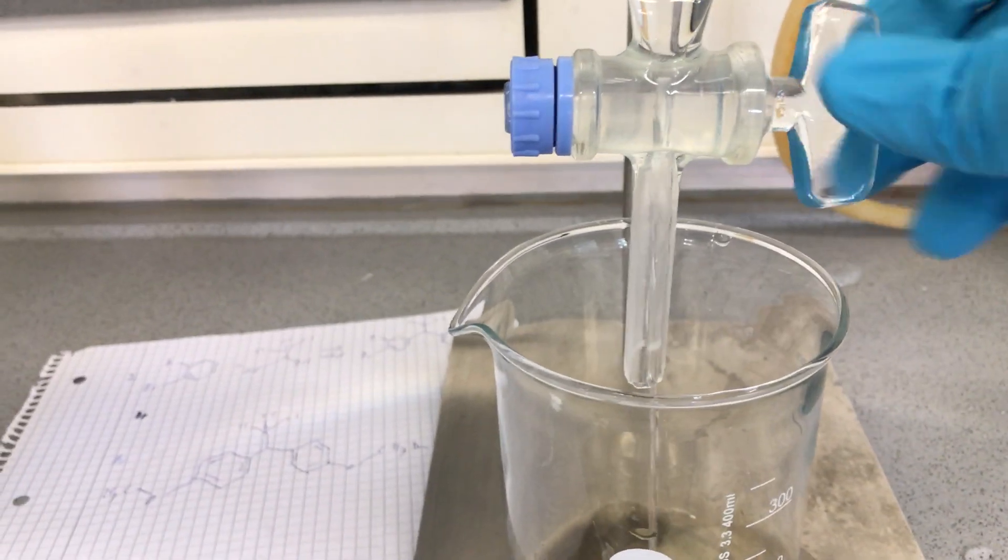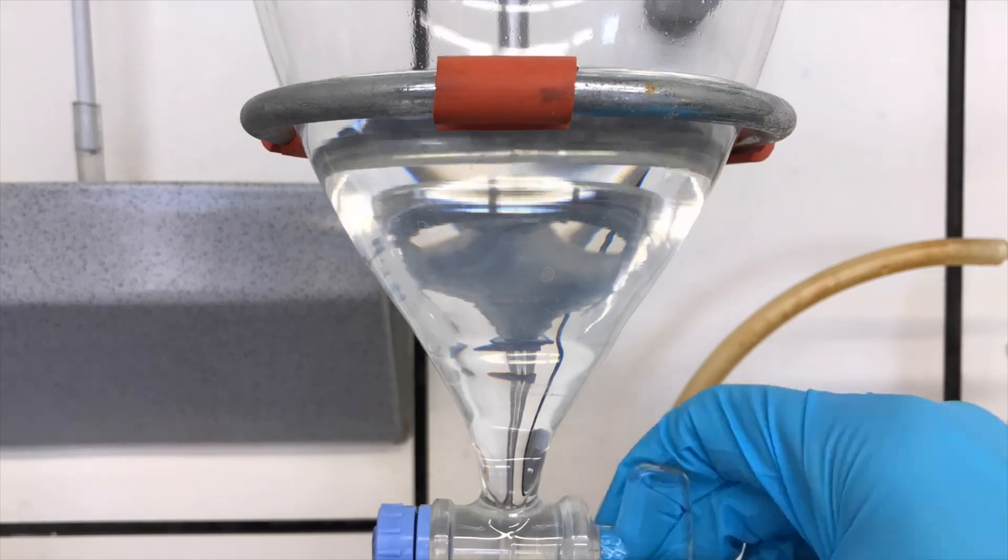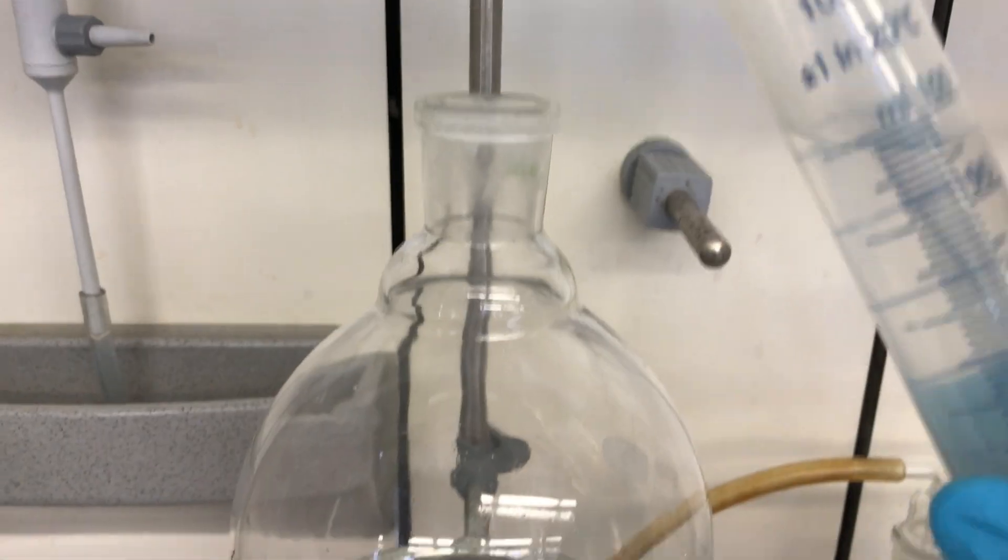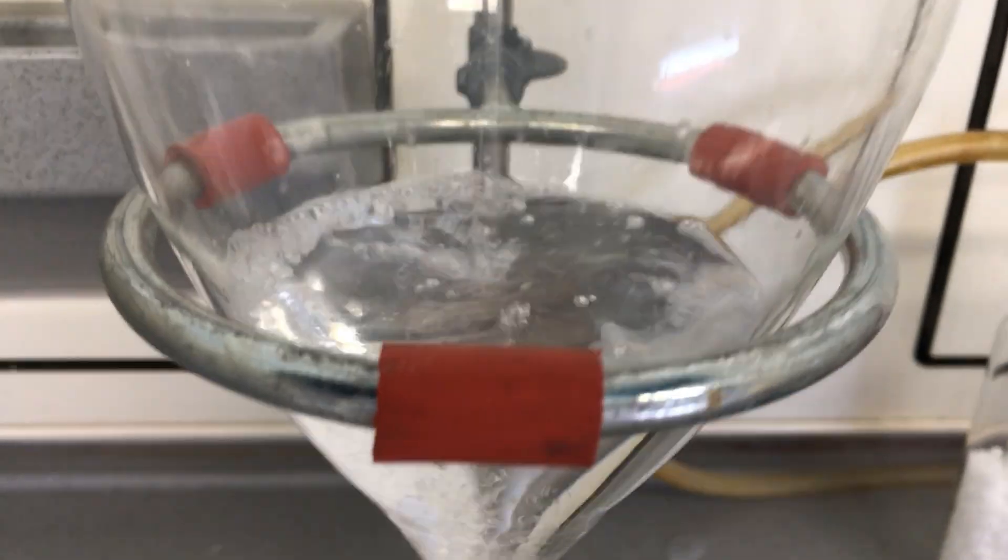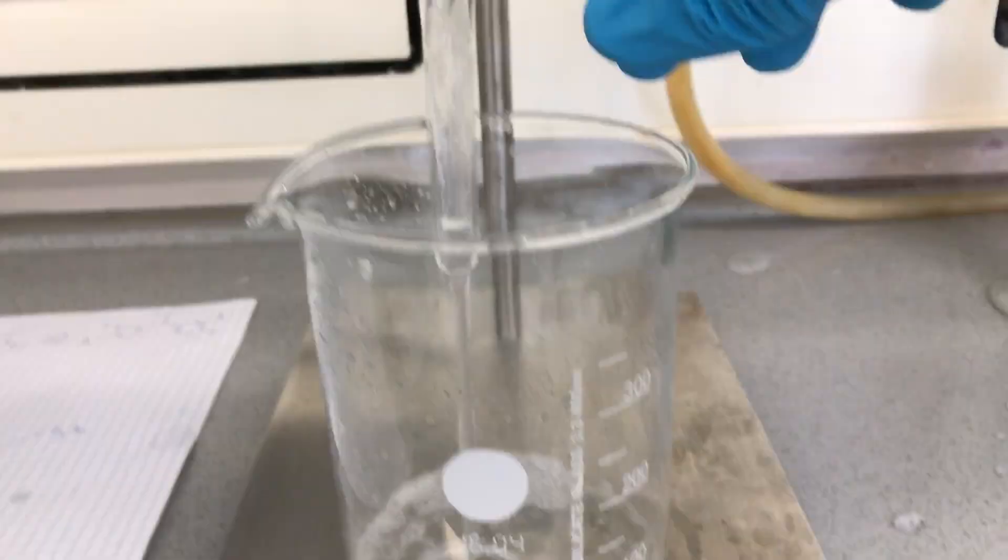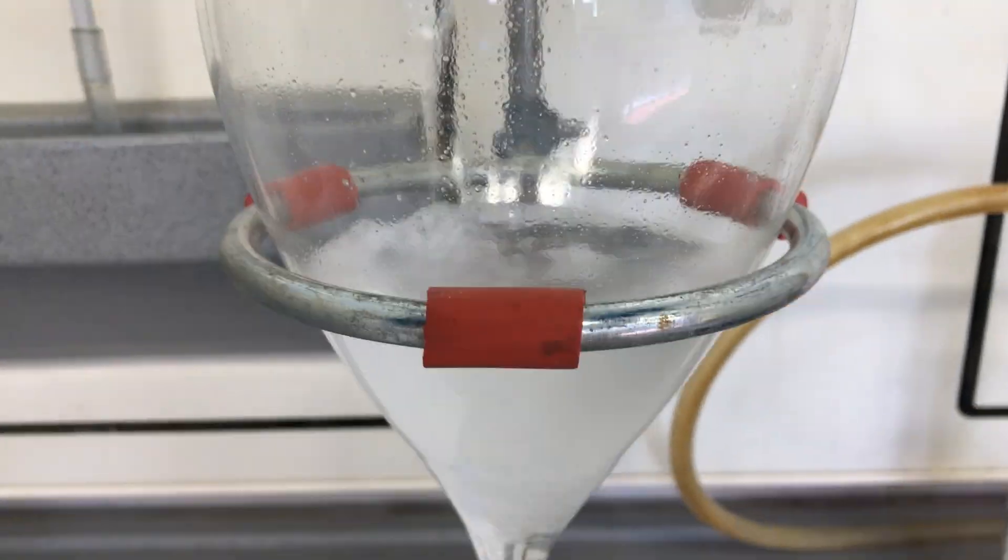The ether layer might now contain some leftover HCl and we want a pure product, therefore we need to remove it. Two washing steps using 140ml of sodium bicarbonate solution each were performed. Again, the bottom layer is the aqueous layer and it will be disposed of while the ether layer is left behind.